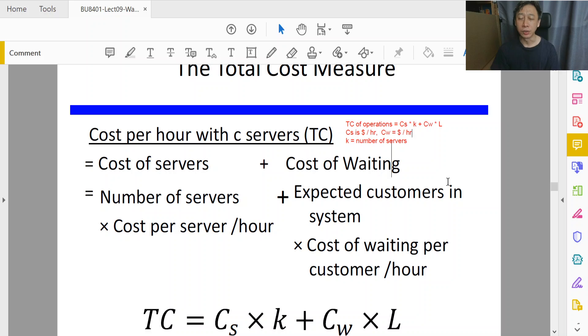We see that k is a number, k times dollar per hour is dollar per hour. Mind you, it's not just dollars but per hour. So TC of operations, the total cost, is actually a rate, a running number. Say when we operate one hour of the queue system, we will have to pay this amount of dollars. That's point number one, so it's a rate not an absolute dollar. Secondly, Cs and Cw are constant rates.